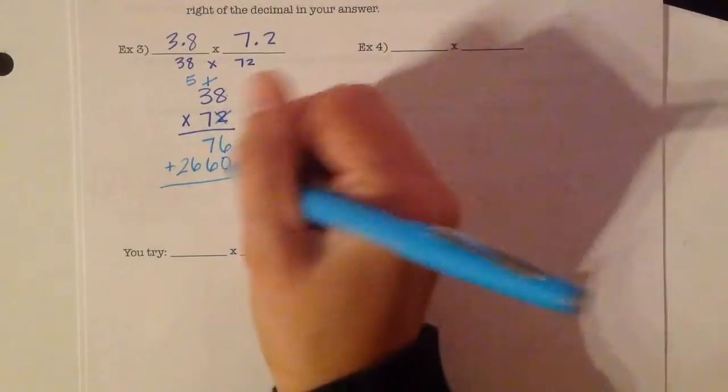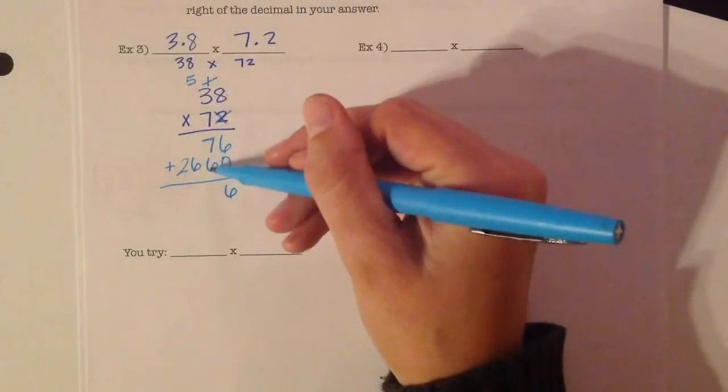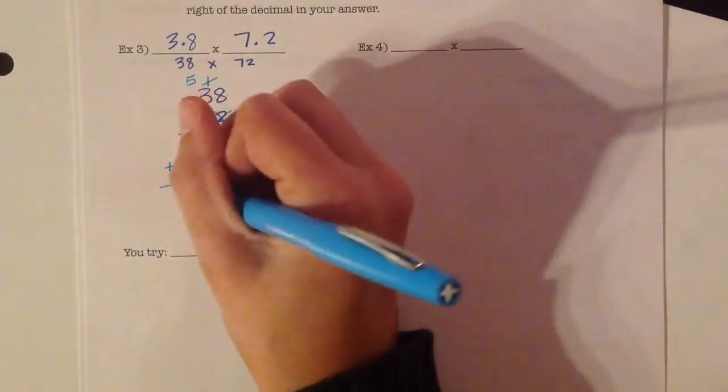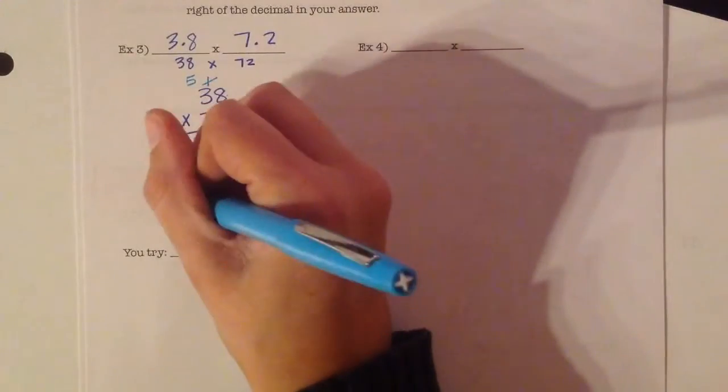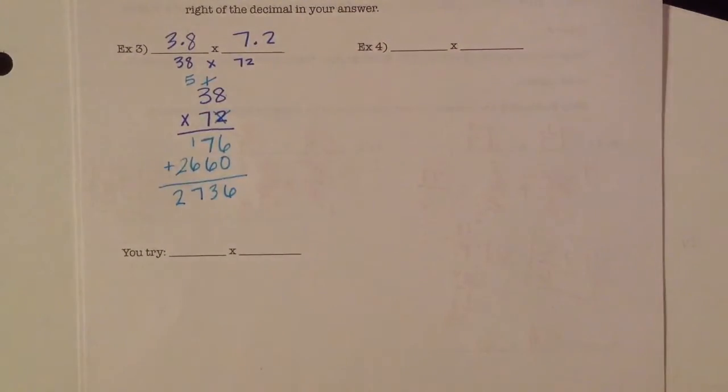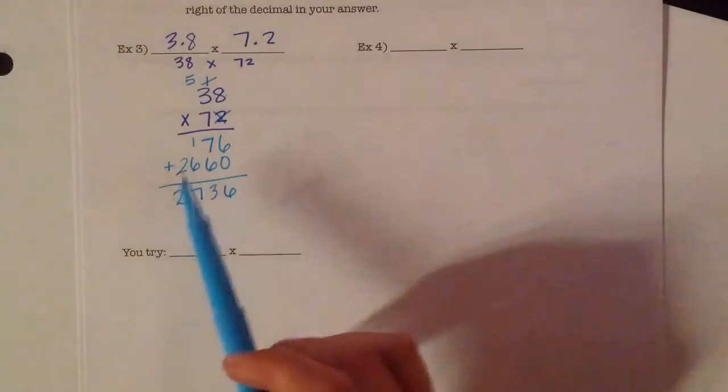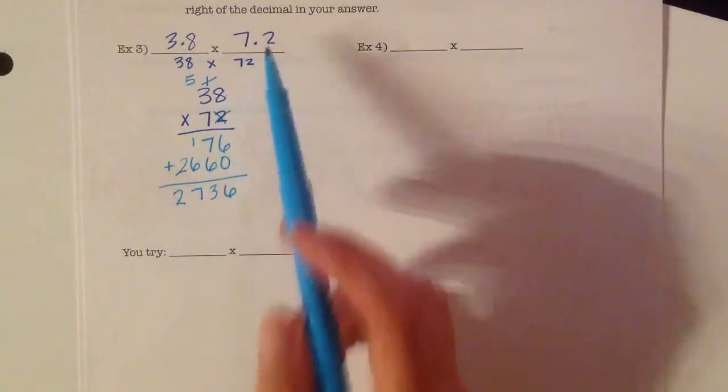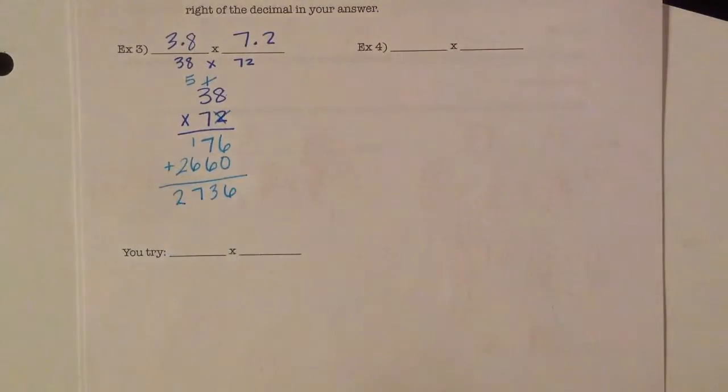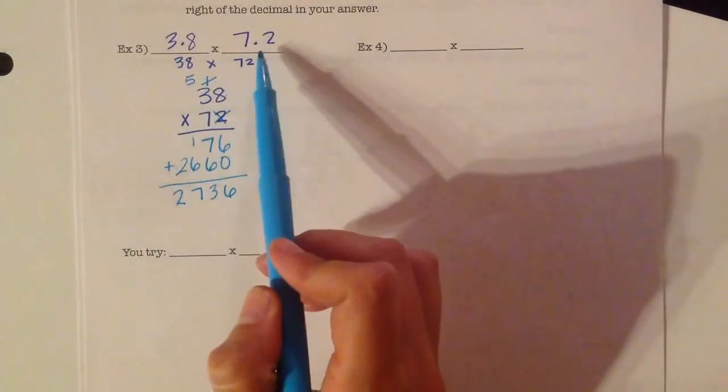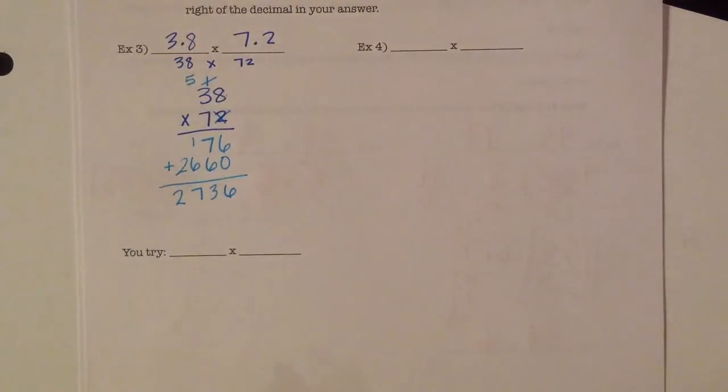Now we can add. 6 plus 0 is 6. 7 plus 6 is 13. So 3 carry the 1. 1 plus 6 is 7. And then 2. So here's where we have to go back and figure out. Well, obviously, 3 and 8 tenths times 7 and 2 tenths is not going to be 2,736. Right? This is about 4 times about 7. So the answer that would make the most sense is somewhere close to 28.